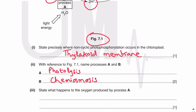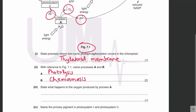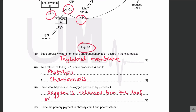State what happens to the oxygen produced by process A. Oxygen is released as a waste product from the leaf, or it can be used in aerobic respiration.